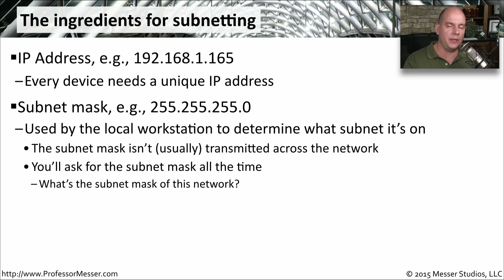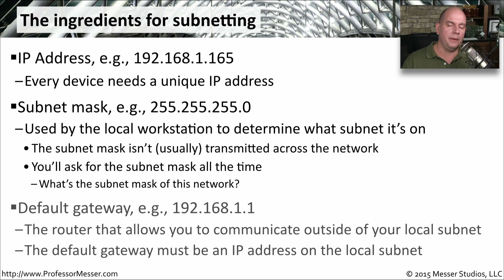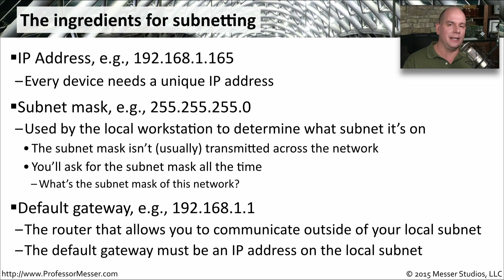So when somebody provides you with an IP address, they're also going to provide you with the subnet mask. And if they haven't, you'll have to go back and ask what is the subnet mask for this device on this subnet. Lastly, if we want to be able to communicate outside of our subnet, we need to know what the router is — this is called the default gateway. This is the device that allows our computer to talk outside of our local subnet. If you need to communicate on the internet, you're going to need to know your default gateway.